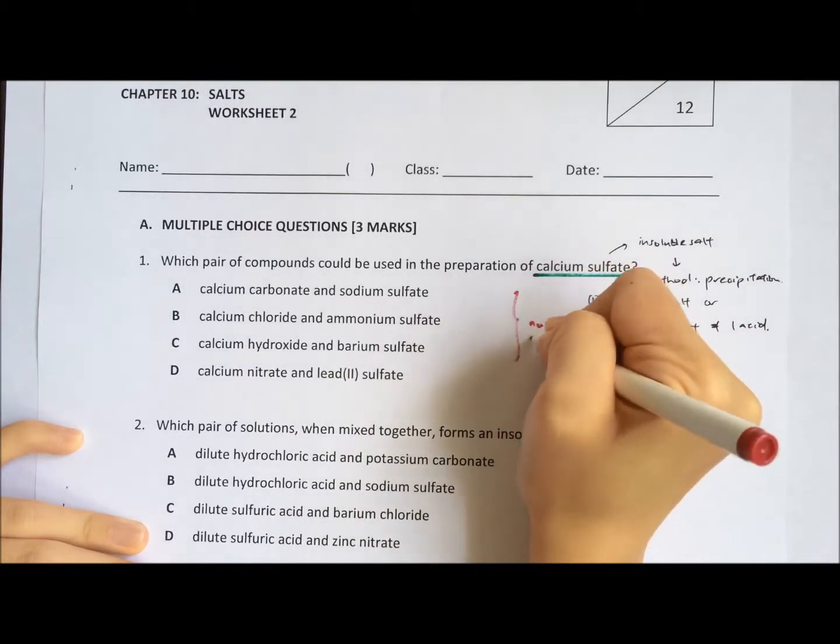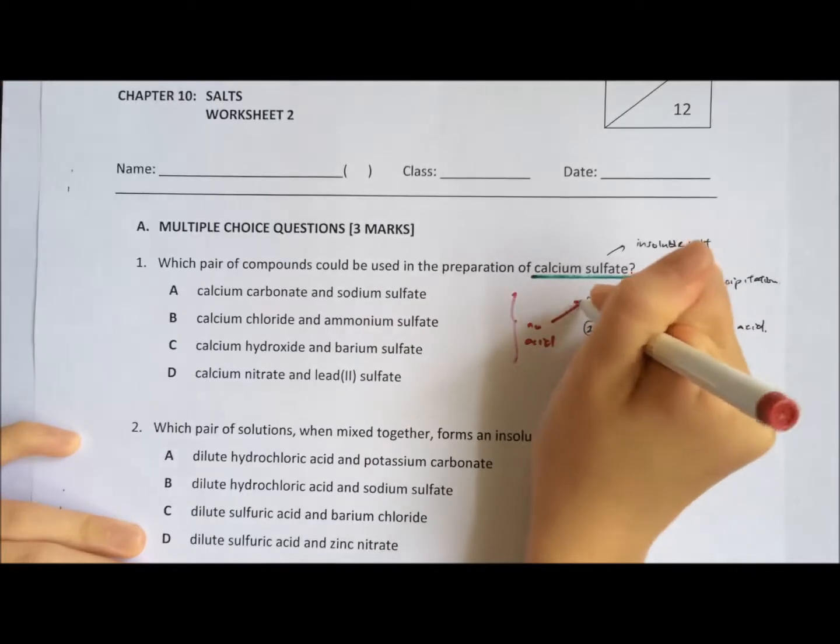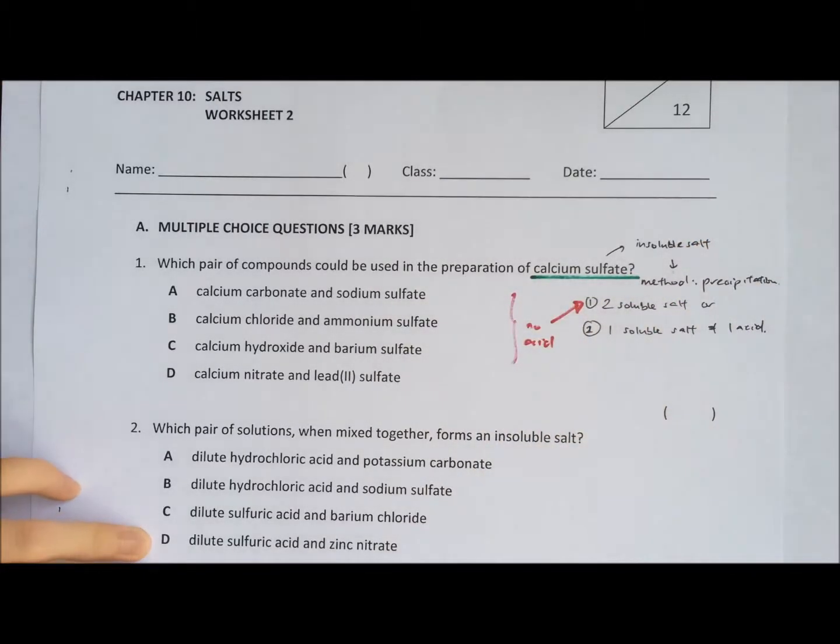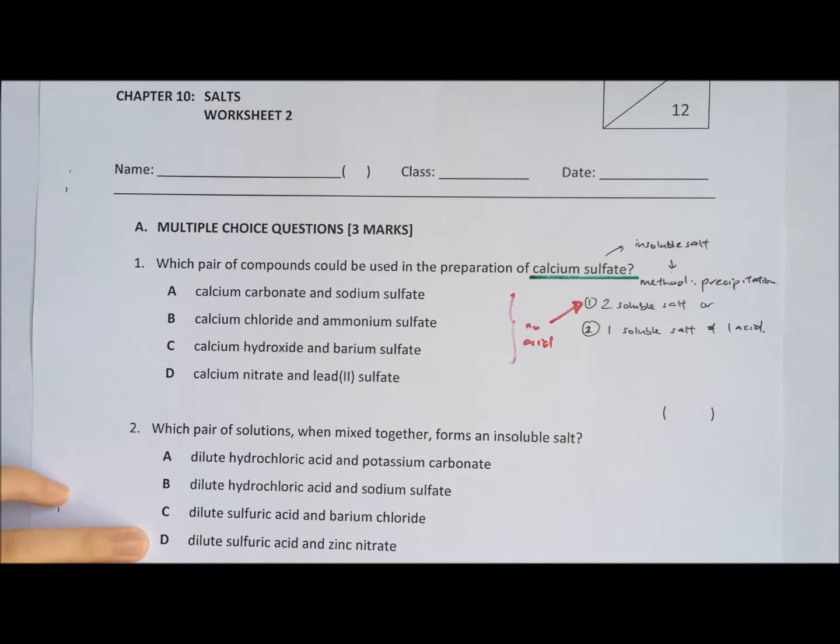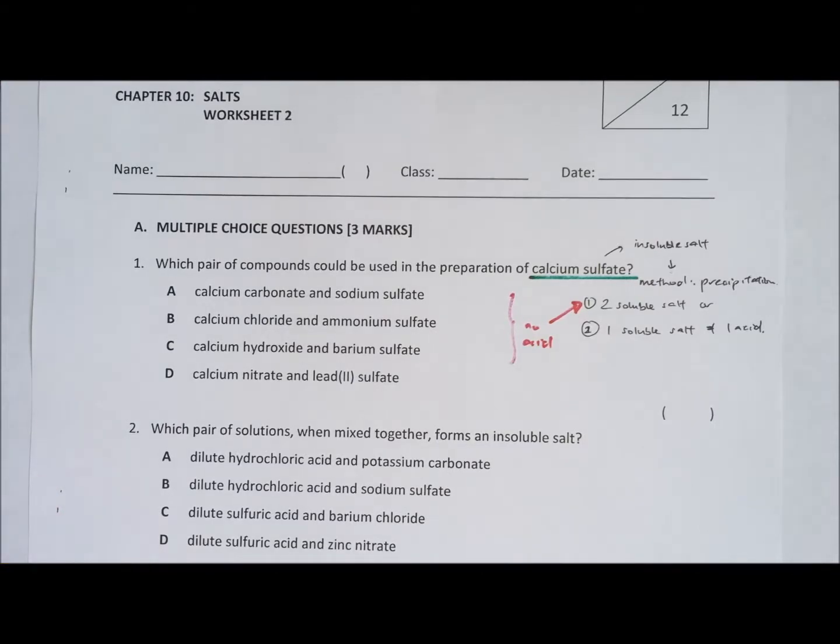As you can see from all the options, there are no acids. So that means we are only looking at number one, which is two soluble salts. So there must be two soluble salts to give us calcium sulphate.